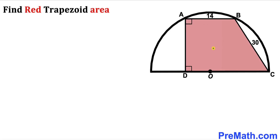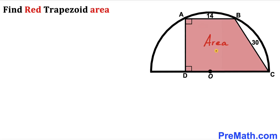In this video we have a red trapezoid ABCD fully inscribed in a semicircle with center O, such that its side length AB is 14 units and its side length BC is 30 units. Our task is to calculate the area of this red shaded trapezoid.